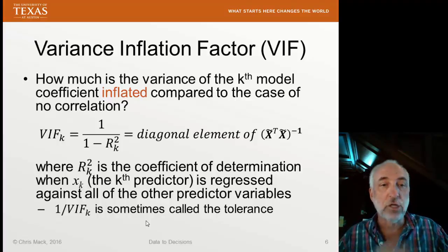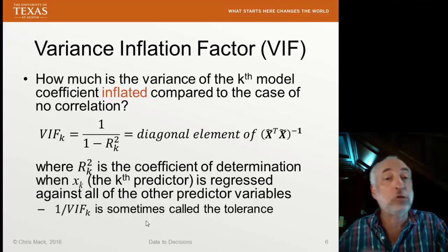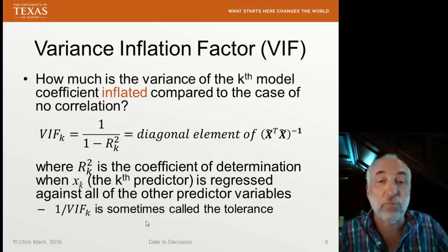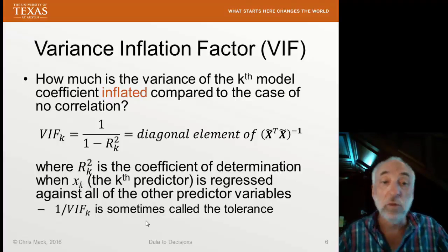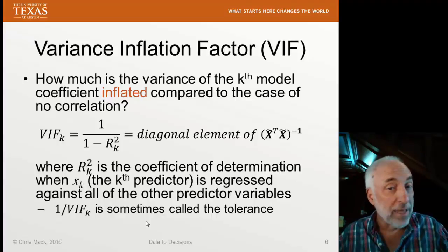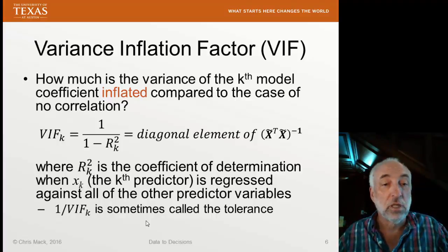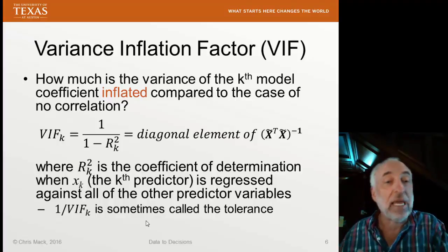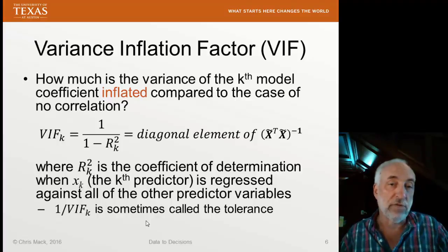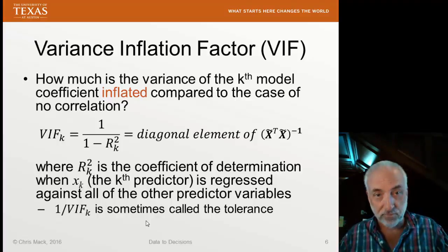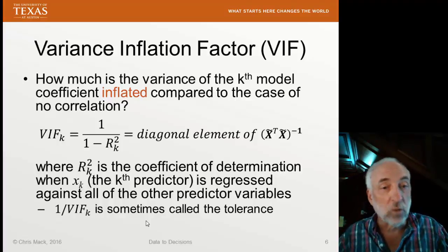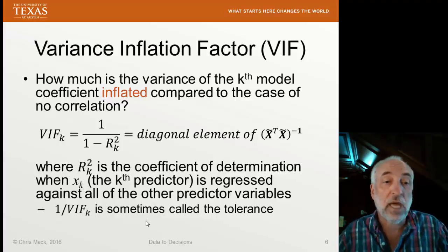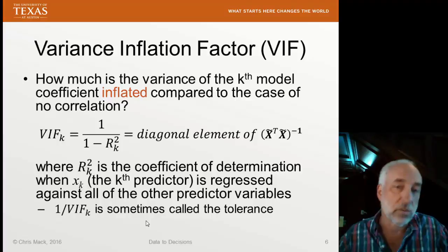This coefficient of determination is a measure of how much all the other parameters in the model allow us to predict what the k-th predictor variable will be. If R-squared equals 1, that means all of the information in the k-th predictor variable X sub k can be obtained — predicted — by the other regression variables. It's redundant; it adds no new information. That would be R-squared equal to 1. The opposite: the k-th predictor variable is completely independent of all the others — that would be R-squared equal to 0.